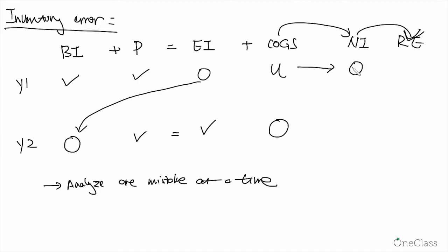So when net income is overstated, retained earnings will be overstated because the net income and retained earnings has a positive relationship.